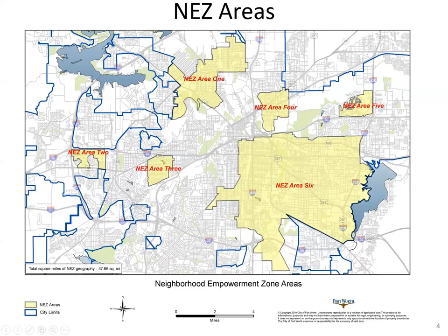Currently, we have six Neighborhood Empowerment Zones. We did have, at one point in time, 23, but they didn't take up the square miles that the current six NEZ areas have. So even though we have fewer NEZ areas, they are larger than they were. NEZ area six, especially, is much larger. This is a little over 47 and a half square miles of the city.